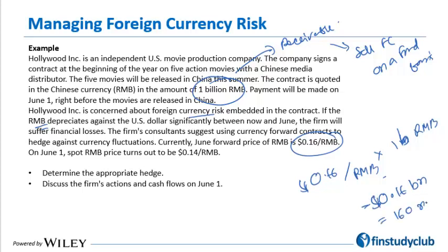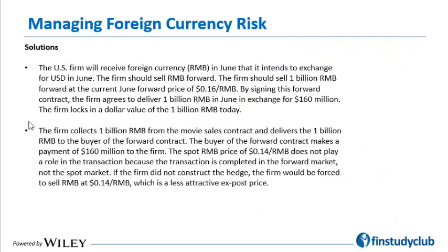On June 1st, the spot RMB price turns out to be 0.14 dollar per RMB. Had Hollywood not covered itself, it would have fetched only 140 million dollars. Having taken the forward position turns out to be a good decision. The appropriate hedge is for Hollywood to go short 1 billion RMB on a forward basis at the agreed price of 0.16 dollar per RMB.